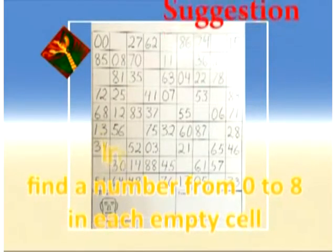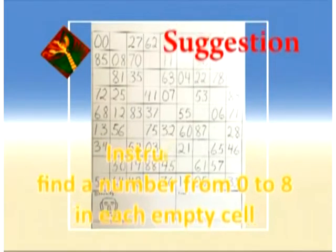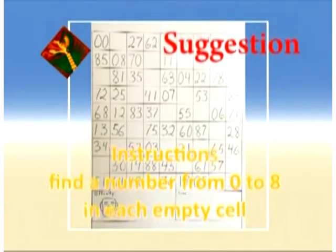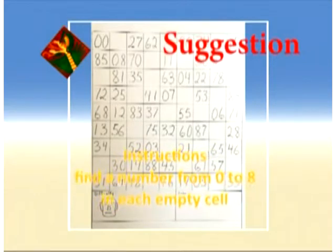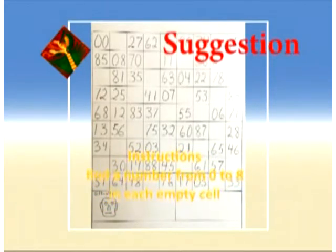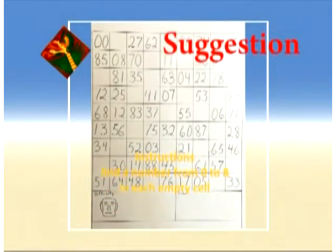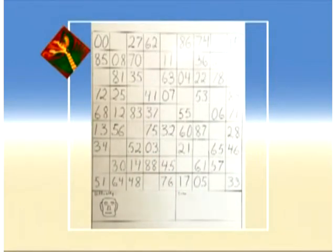Now a hint is to find the rows or columns that need the least amount of blanks to fill in and start with them. I start with the row or column with the least amount of blanks in it.